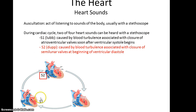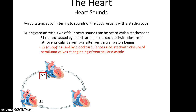Then S2, or the "dub" of the heart, is caused by blood turbulence associated with the closure of the semilunar valves at the beginning of ventricular diastole. Once all the blood from the ventricles is pushed out and the ventricles stop contracting, some blood wants to push back into the ventricles, but instead you get closure of the semilunar valves, preventing that backflow — and that turbulence is the dub. So basically the heartbeat we think of as lub-dub is turbulence caused by the blood.